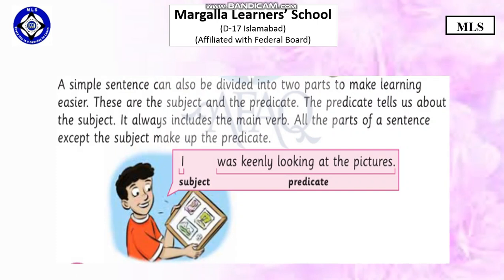For example, 'I was keenly looking at the pictures.' Here, 'I' is the subject — since 'I' is the subject, it cannot be included in the predicate. The rest of the sentence will be the predicate.